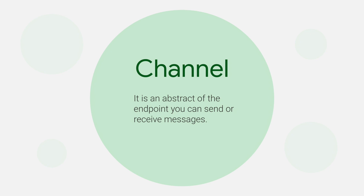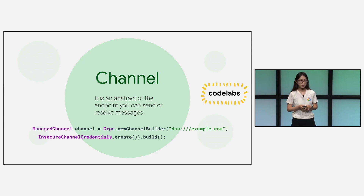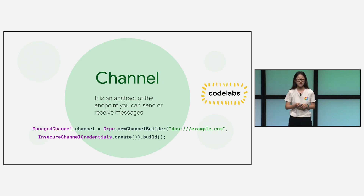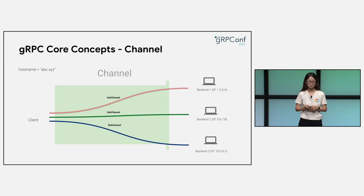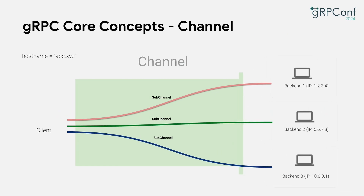gRPC's core concepts start with the channel. A channel is an abstraction of the endpoint that you can send or receive messages on. It is the first object you will create when using gRPC. To create a channel, you provide the target URL string to specify the remote host name and then channel credentials for authorization. The sub-channels are the real connections towards the backend services. gRPC during its lifecycle will create those sub-channels, dynamically select sub-channels to multiplex RPCs over the channel, report channel status, and finally tear down sub-channels to return resources.